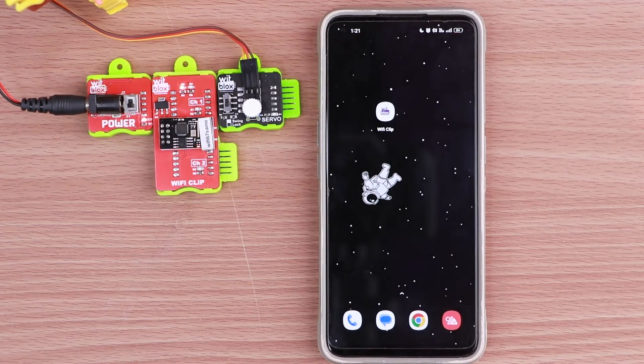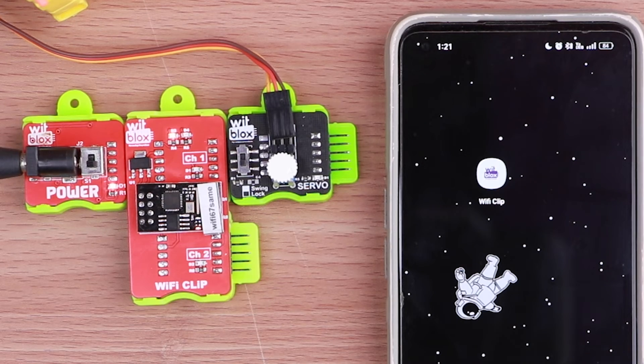First turn on the power blocks. This ensures that Wi-Fi blocks is receiving power.